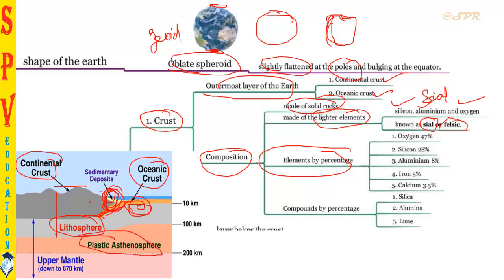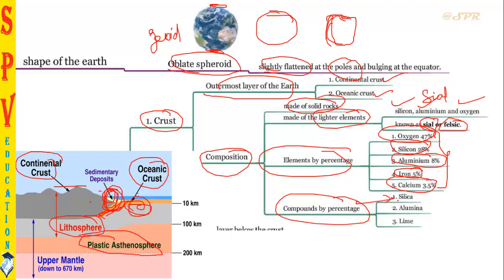Oxygen is 47%, silicon is 28%, aluminium is 8%, iron is 5%, and calcium is 3.5%. You must know the order if you are preparing for UPSC, because they may give a sequence and ask you to arrange it in ascending or descending order. The order is: oxygen, silicon, aluminium, iron, calcium. In compound form, silica (SiO₂) is present in the highest percentage, followed by aluminium compounds, then lime.